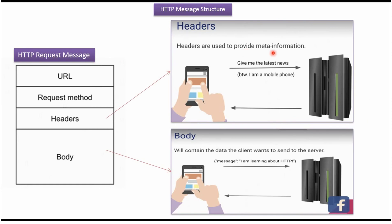Headers are used to provide meta information, which is additional information to the original request. For example, a mobile client sends a request to the server saying 'give me the latest news.' Along with this, the mobile client sends additional information in the header indicating the request is coming from a mobile phone. The server sees this and sends the response in a mobile-friendly format. The body contains the data which the client wants to send to the server — for example, 'I am learning about HTTP.'